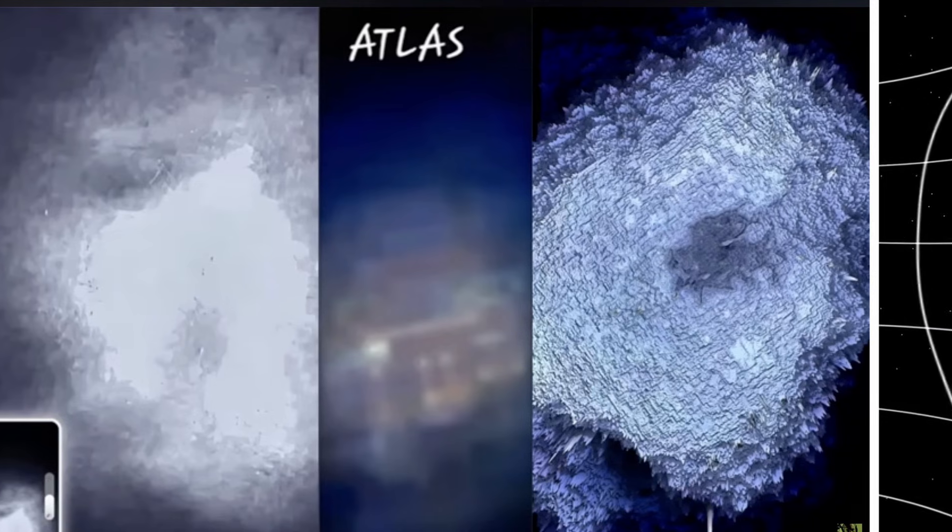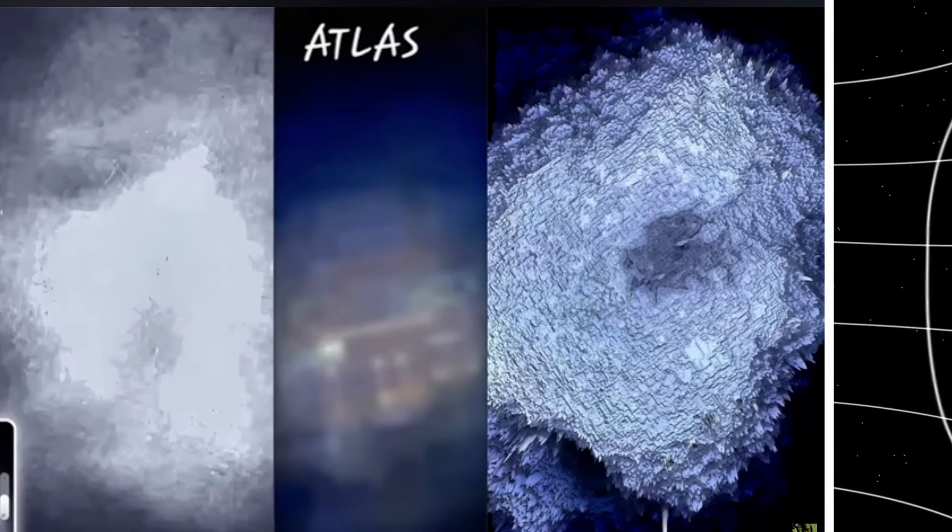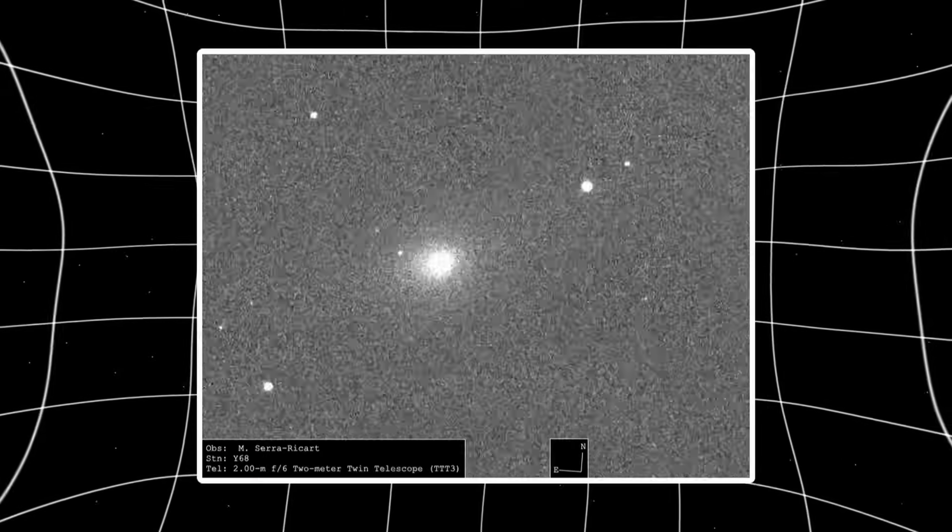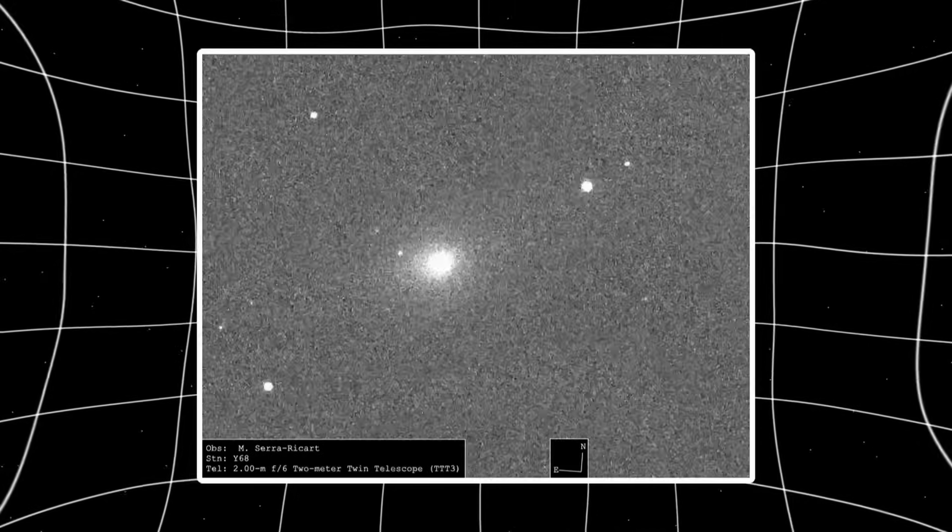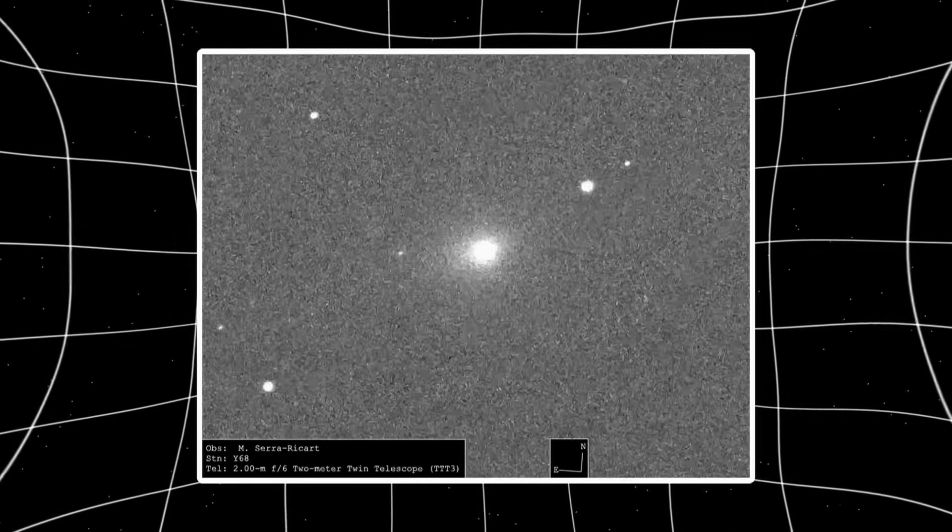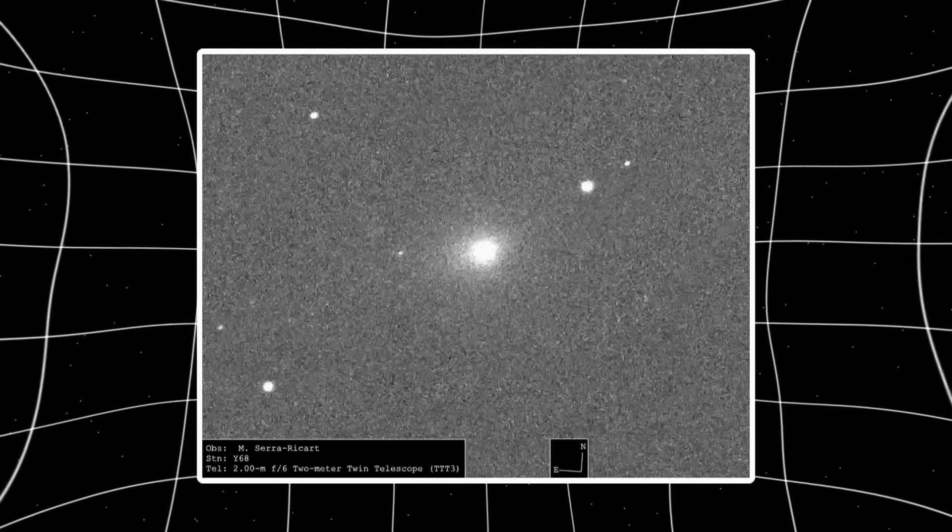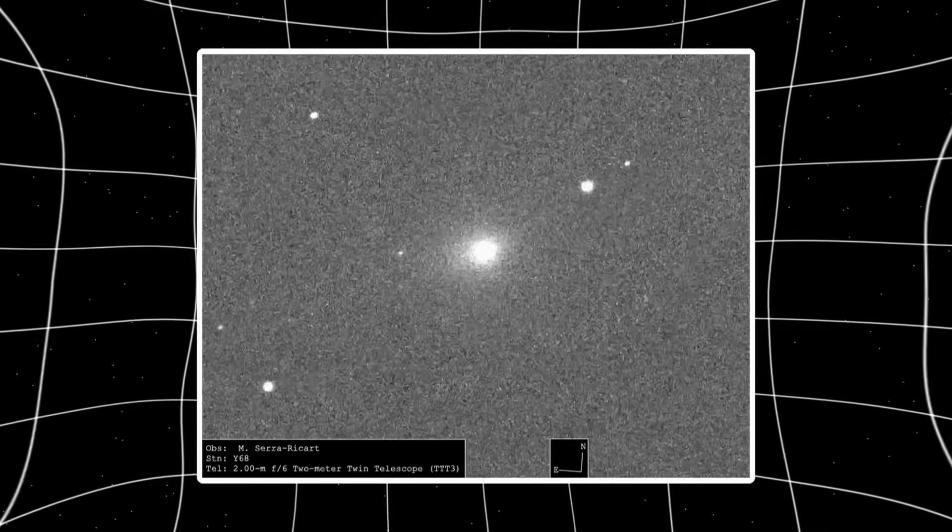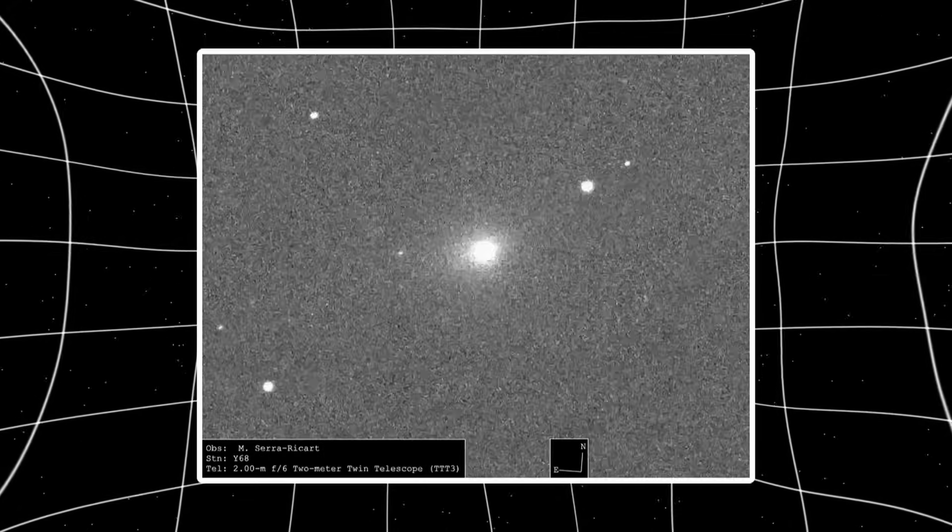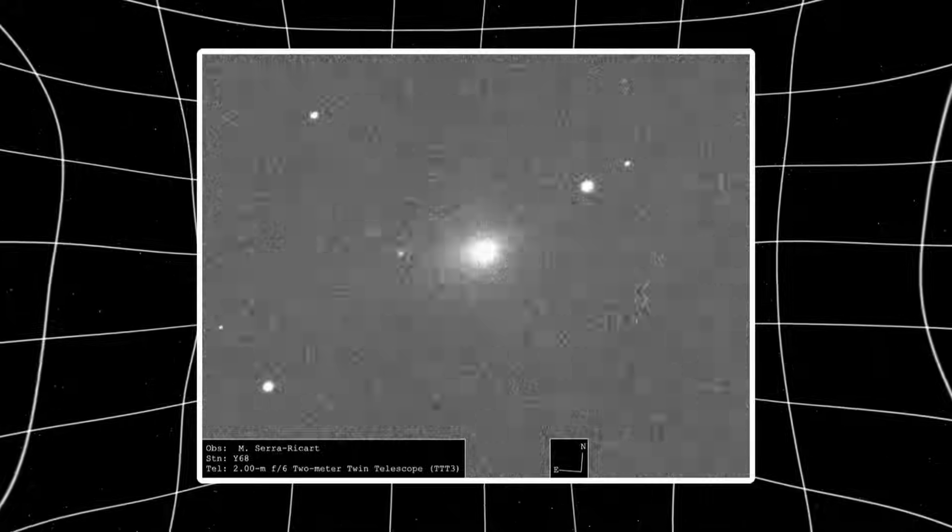Now, here's the part most people will misunderstand. That's not a failure. That's not a letdown. That's science working exactly the way it's supposed to. Because what this result actually did was place the strongest upper limits yet on any possible radio transmitter associated with an interstellar object. Translation: if something is transmitting from 3i Atlas, it's quieter than our best instruments can detect. That doesn't mean there's nothing there. It means if there is something there, it's either off, dormant, or using a method we're not equipped to hear yet. And honestly, that's almost more interesting than a detection would have been.